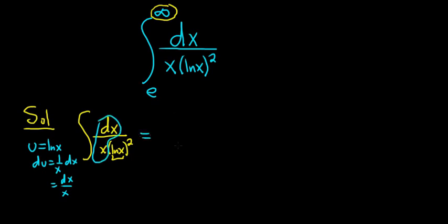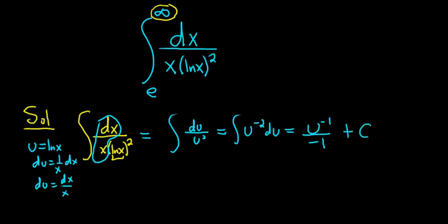So this is equal to du over u squared. Now we can bring the u upstairs so it becomes u to the negative 2 du, and we can use the power rule for integration. So we add 1 to the exponent so we get u to the negative 1 over negative 1 plus our constant of integration capital C. So this is equal to negative 1 over u, and then u was the natural log of x plus our constant C.